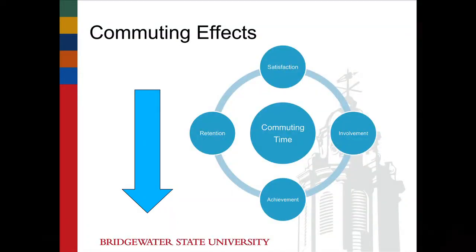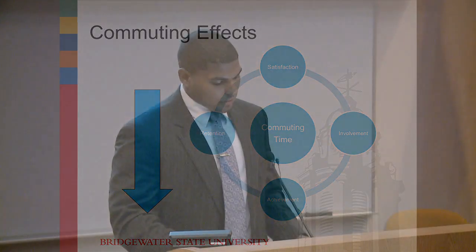The findings for commuter students are significantly different. Astin found that the more time a student spends commuting to campus, the more negative effects it has on certain aspects of student development. The more time a student spends commuting, the less time — reporting negative impact on retention and attainment of the bachelor's degree and growth in leadership abilities. Also very importantly, the less they join extracurricular organizations or get involved. Essentially, all the positive effects are related to living on campus, while the negative effects are related to commuting.